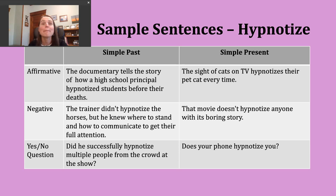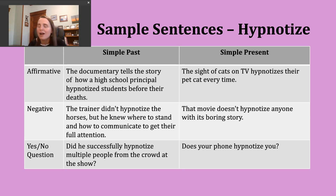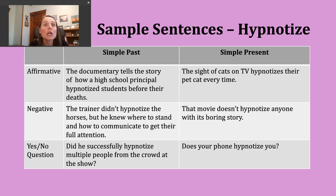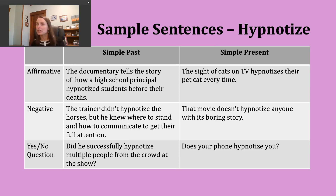To make a yes or no question in the simple past tense, start with 'did,' then your subject, then the base verb. Notice we're not using the -ed form in a yes/no question — the -ed form is only used in the affirmative. For example: 'Did he successfully hypnotize multiple people from the crowd at the show?' — referring to someone who does this for entertainment.